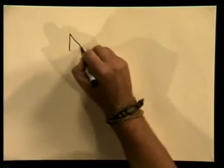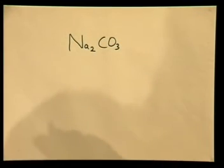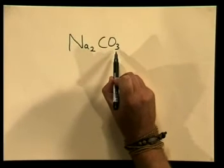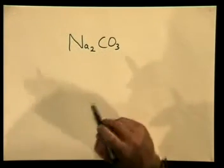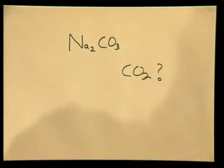Let's now look at the chemical equation to find out exactly what gas is released from the reaction. The formula for sodium carbonate is Na₂CO₃. The gas that is given off must contain carbon and oxygen. We predict this will be carbon dioxide, or CO₂. We can test to see if this gas is carbon dioxide by bubbling it through clear lime water.